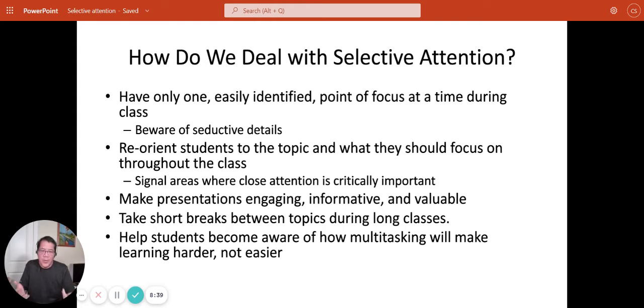How do we deal with selective attention? It is a huge problem in teaching. The first one, the most basic one, is to have only one easily identified point of focus at any given time during the class. Part of teaching is attention management, knowing where your class's attention is supposed to be focused. Is it either on the PowerPoint slide or is it on me? If it's supposed to be on me and not the PowerPoint slide, then you can blank out the PowerPoint slide while you're talking. Be aware that every time you put up a new PowerPoint slide, the students are going to be paying attention to that. They're going to be trying to copy it down. Give them a chance to copy it down. Always have one easily identified point of focus at a given time. And I've got this note: beware of seductive details.